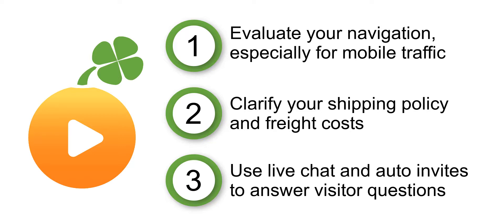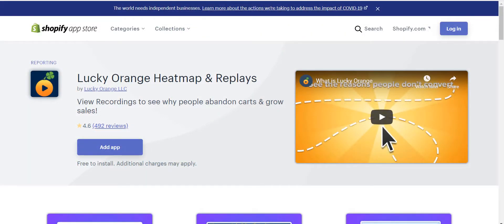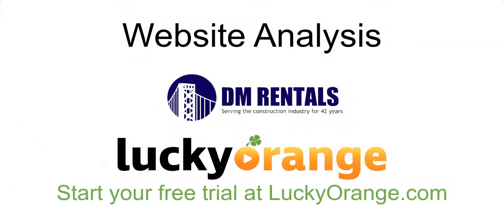DM Rentals has an incredible Shopify store and an exciting future. Using visitor behavior, its team is going to find ways to improve the store and make updates that drive more sales and make customers happier. To try Lucky Orange on your Shopify store, find it in the Shopify App Store and start your free 7-day trial — no credit card required. To watch more website analysis videos like this one, be sure to click on the subscribe button below.